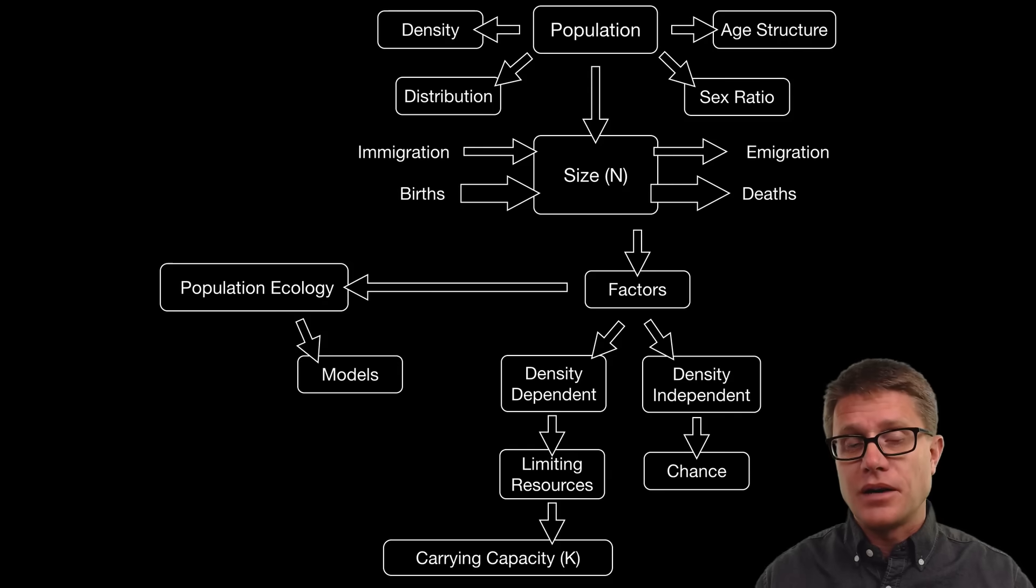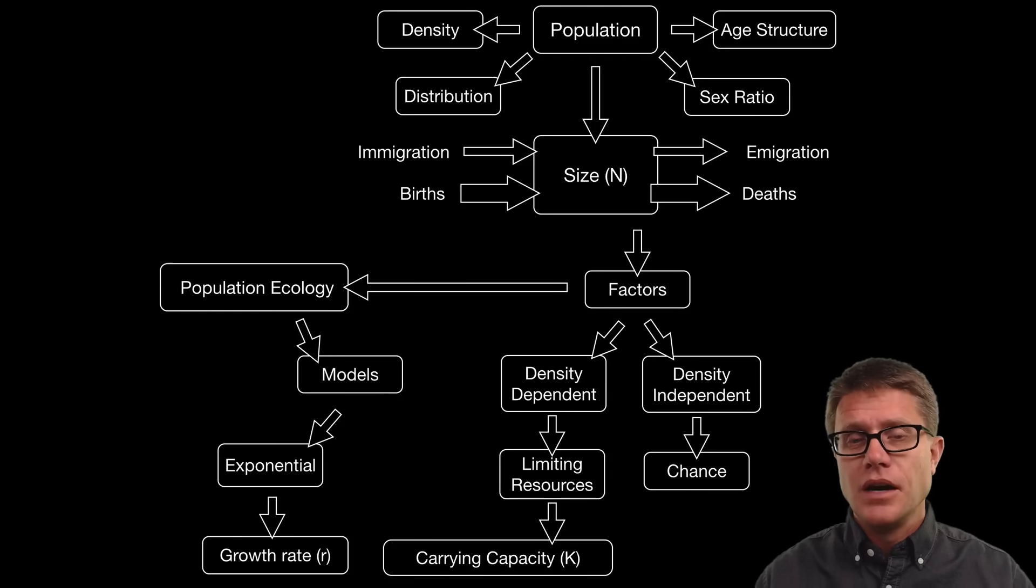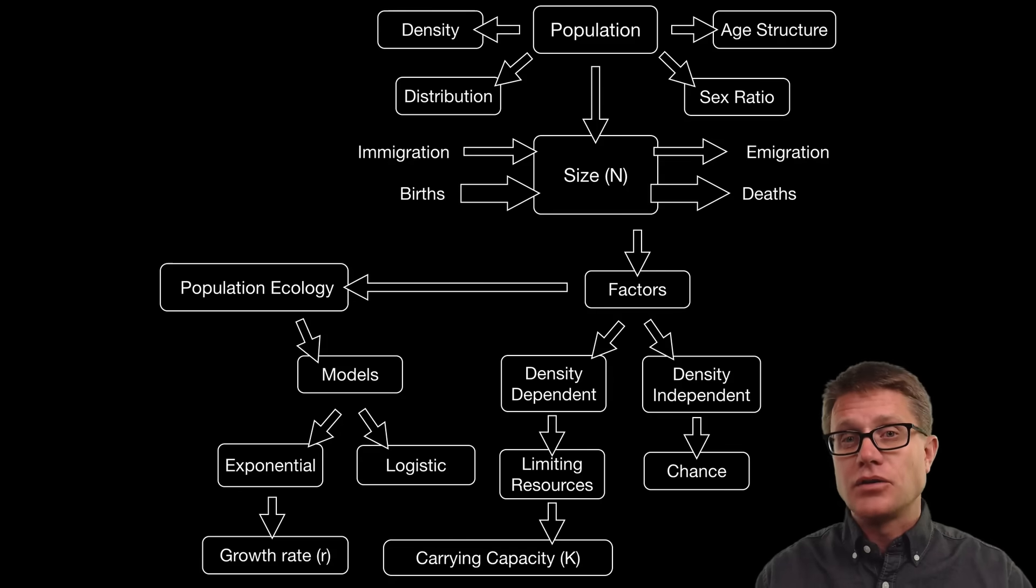So in population ecology we are studying these factors. And scientists come up with models that help to describe what is going on in a population. So a famous model is the exponential growth model. What we are looking at is this growth rate and how it is increasing the population over time. And then we have a logistic model. It is also showing exponential growth but eventually it is reaching what is called a carrying capacity or this limit of population growth.